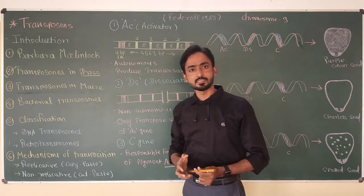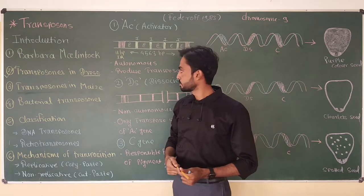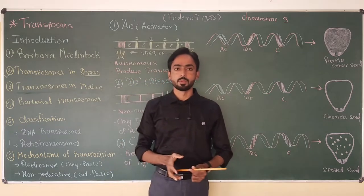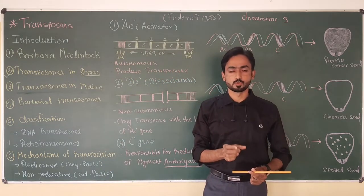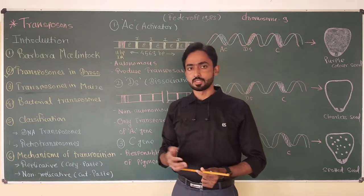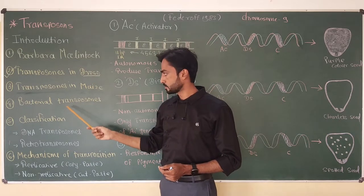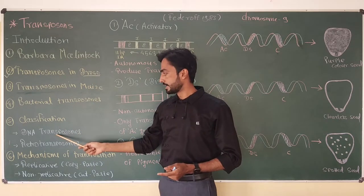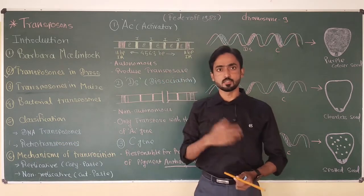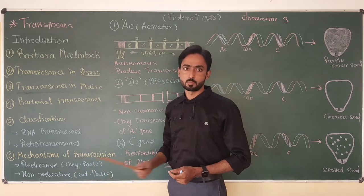In my previous video, I discussed in detail about the discovery of transposons, which was made by Barbara McClintock. I also discussed transposons present in Drosophila, like the P element and Copia element. The P element, a well-known transposon in Drosophila, is responsible for a disorder called hybrid dysgenesis. I also gave a quick introduction of transposons in maize, bacterial transposons, and different types like DNA transposons and retrotransposons, and the mechanisms — replicative or copy-paste, and non-replicative or cut-paste.